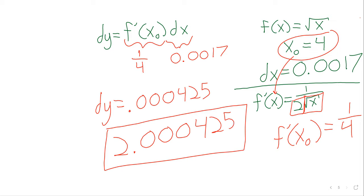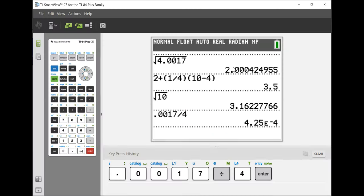Is our approximation any good? Yeah. It's, wow. I hadn't intended to, but somehow I just sort of pulled from my subconscious the exact example we did yesterday with linearizations. I now see we did the square root of 4.0017 using linearizations. And we got 2.000425.